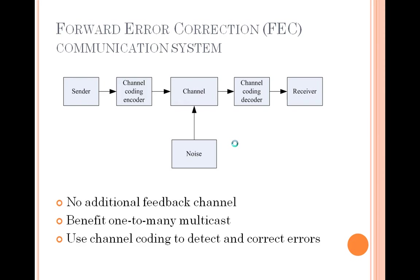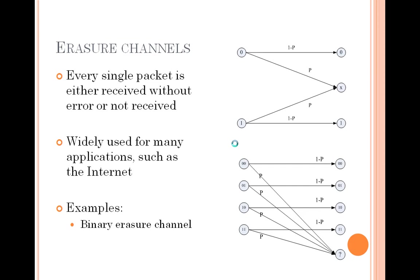This is the system block diagram of a FEC communication system. It uses channel coding to encode the source file, transmits the encoded file over a channel with noise, and uses channel decoding to detect and correct errors, and recovers the original file. The benefits are no additional feedback channel, good for one-to-many multicast. In an erasure channel, every single packet is either received without error or not received. This type of channel is very important and widely used for many applications, such as the internet.